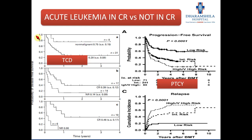40% of patients are not going to respond to induction chemotherapy. Among the responders, 60-70% of patients are going to relapse. And among the relapse group, only 20-30% of patients are fortunate enough to achieve CR2. So the main challenge in front of the transplant community is how to give better outcomes in these cases.